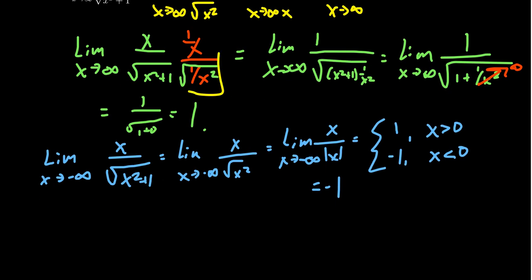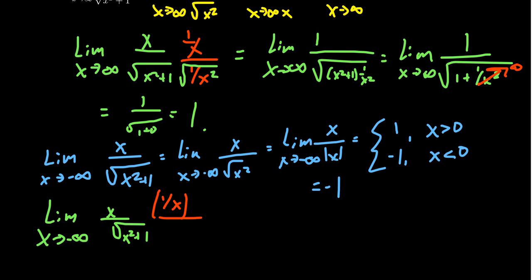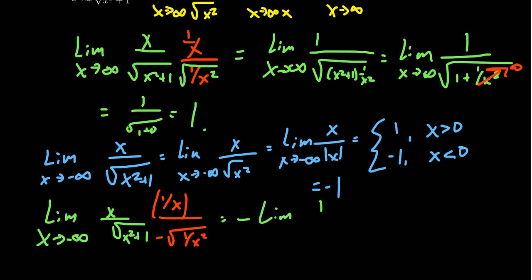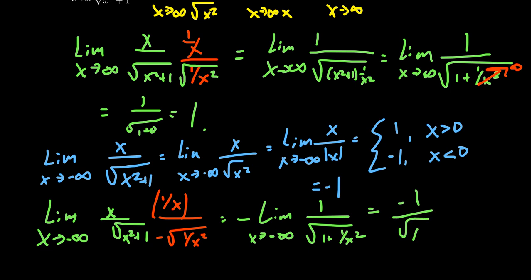Let's compare using the formal approach: take the limit as x approaches negative infinity of x over the square root of x squared plus one, multiplying top and bottom by one over x. But we need to rewrite one over x as the square root of one over x squared to bring it inside the square root. Here the sign is incompatible: the square root is inherently positive, but as x approaches negative infinity, x is negative. So you have to introduce a negative sign to ensure you're multiplying by positive one, not negative one. This gives a negative sign in front of the whole expression, yielding negative one over the square root of one plus one over x squared. As x approaches negative infinity, one over x squared goes to zero, giving negative one over the square root of one, which is negative one.